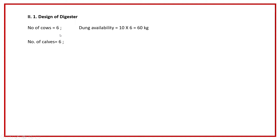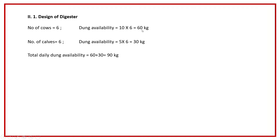Similarly, he has six calves and the average value of cow dung from a calf in a day is almost 5 kg. So dung availability from the calves is 5 into 6, that is 30 kg. The total dung availability for that particular farmer is 60 kg from the cows plus 30 kg from the calves, so totally 90 kg. Cow dung contains almost 18 to 20 percent total solid content.